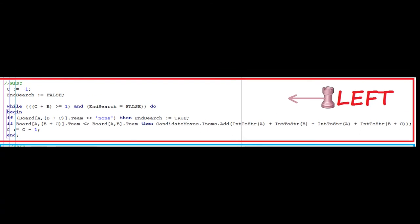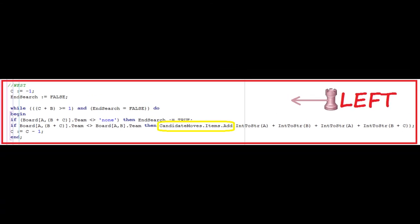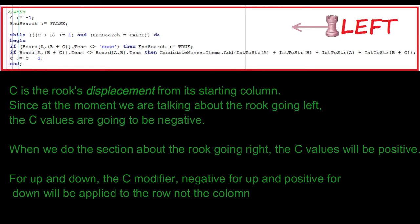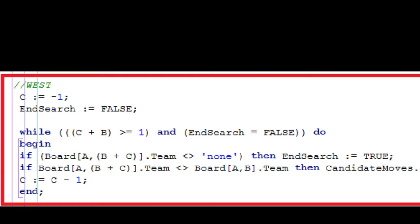To start making sense of it, look at the part where moves are added to the candidate moves list coded in the 4-digit fashion. candidate moves.items.add That means put on the list, first the digits that specify the row and column of the rook's starting location. And then, since we are considering the rook moving to the left only, the row it is in will not change, so the third digit will be the same as the first one. The final digit is B plus C. Since B is the rook's starting column, what is C? It is the rook's displacement from its starting column. Since at the moment we are talking about the rook going left, the C values are going to be negative. When we do the section about the rook going to the right, the C values will be positive. For up and down, the C modifier, negative for up and positive for down, will be applied to the row, not to the column. So here is how we read the code.